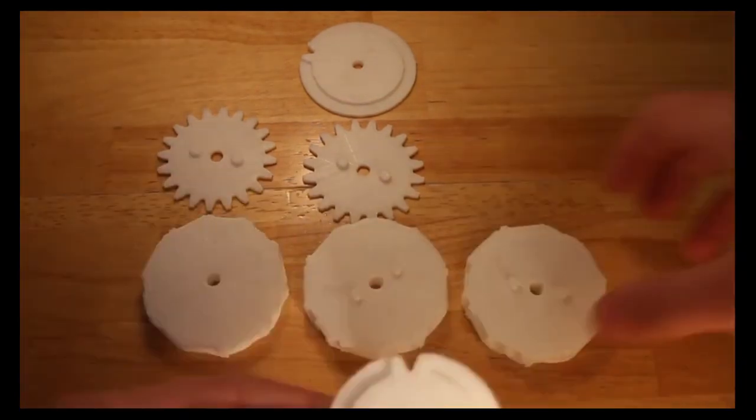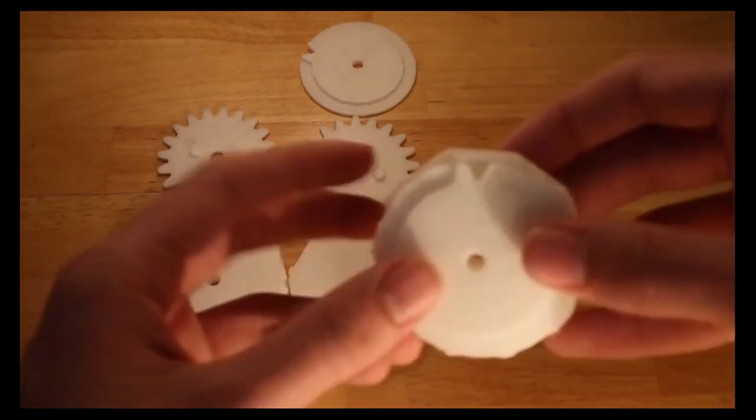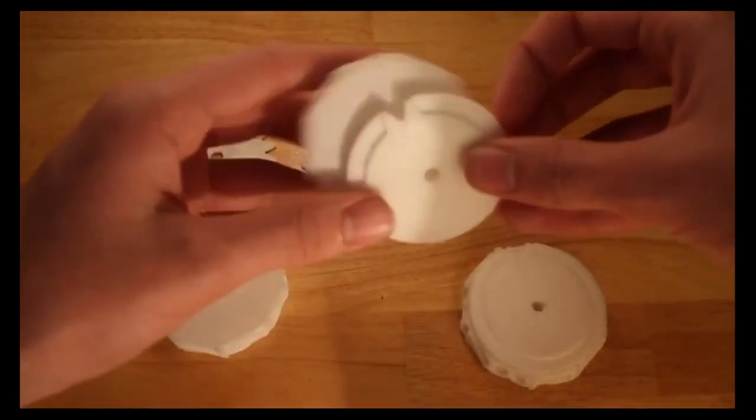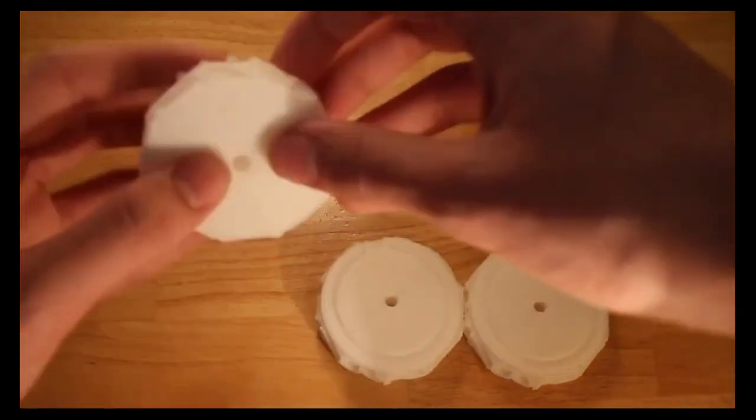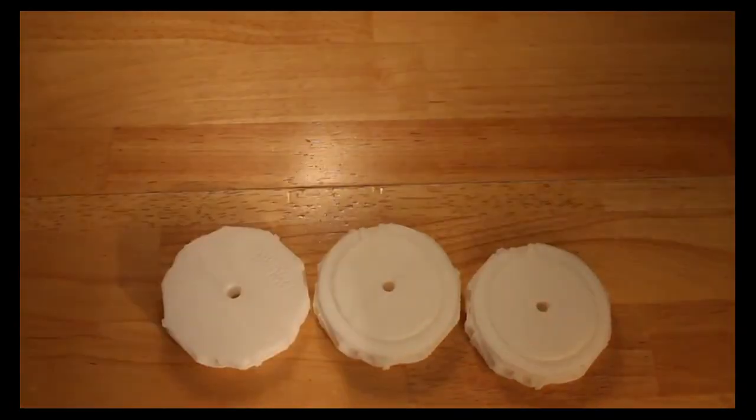So what you want to do next is add the carry wheels to the number wheels while making sure the notch lines up with the number 7 on each wheel. Then after that, you're going to add the two normal gears, just as shown.